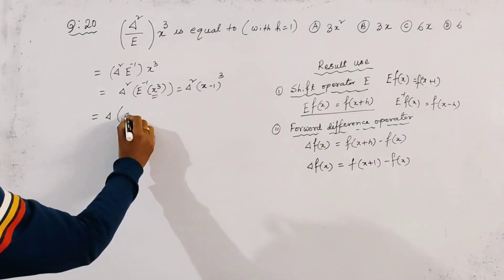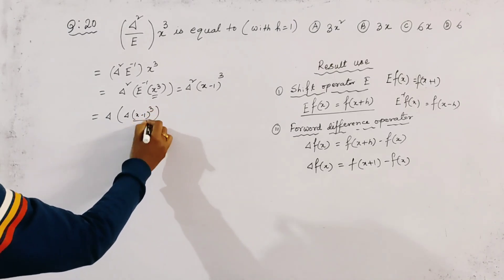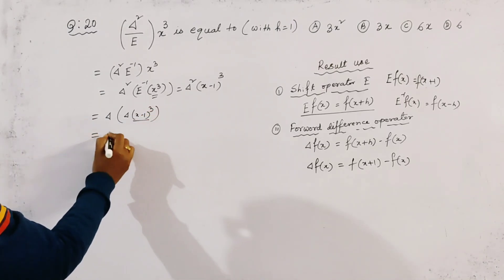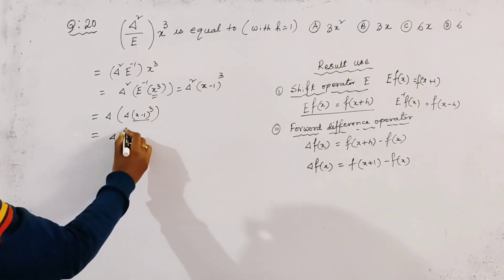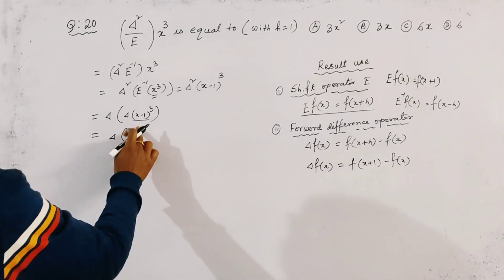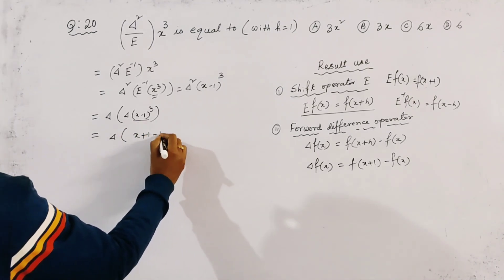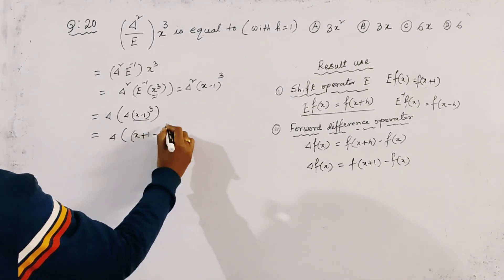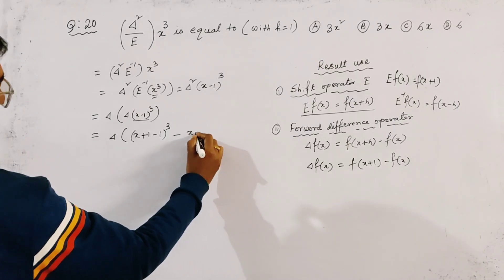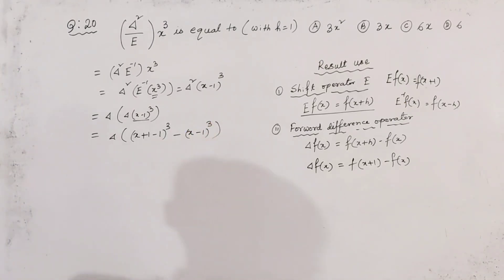We now apply Δ of Δ f(x). So Δ(x-1)³ gives us Δ of f(x+1-1)³ minus (x-1)³, which equals Δ of x³ minus (x-1)³.